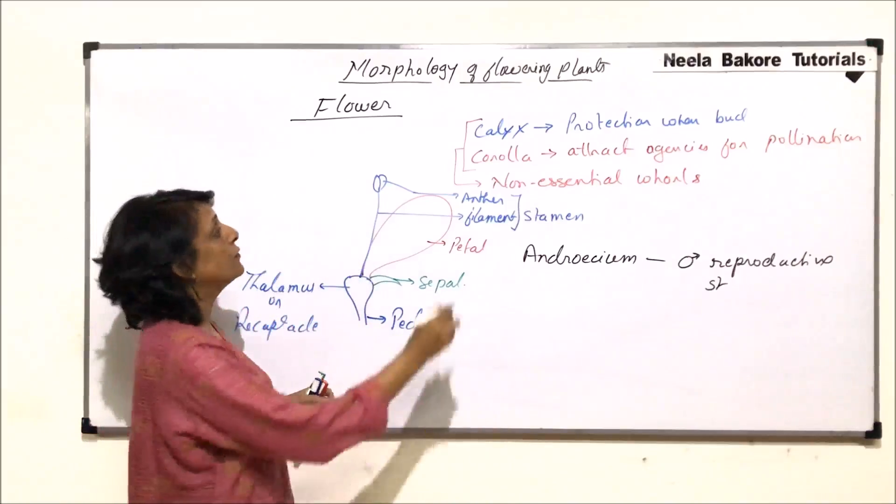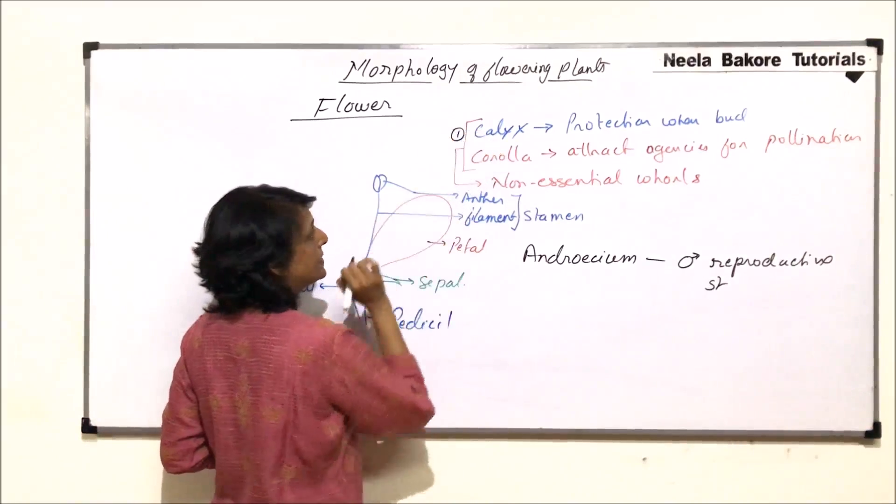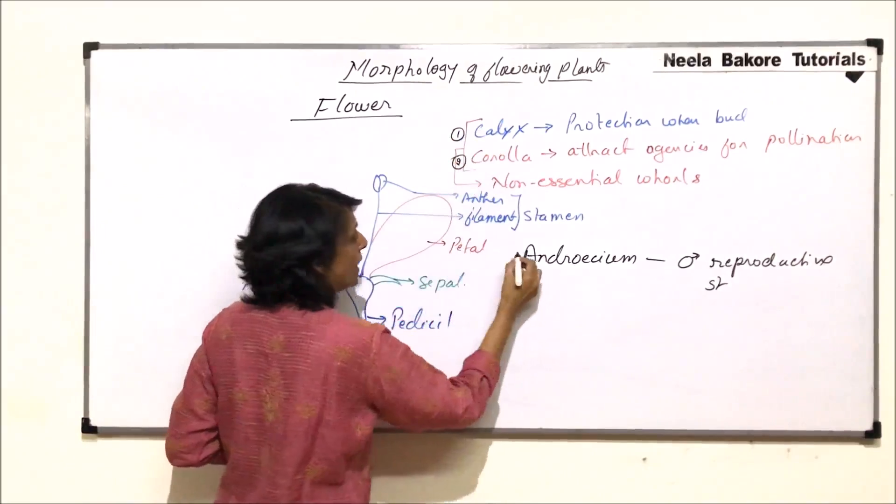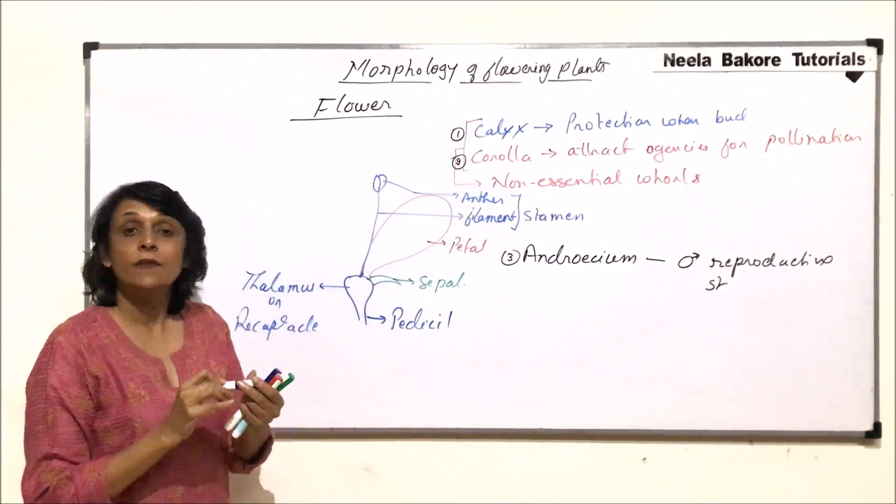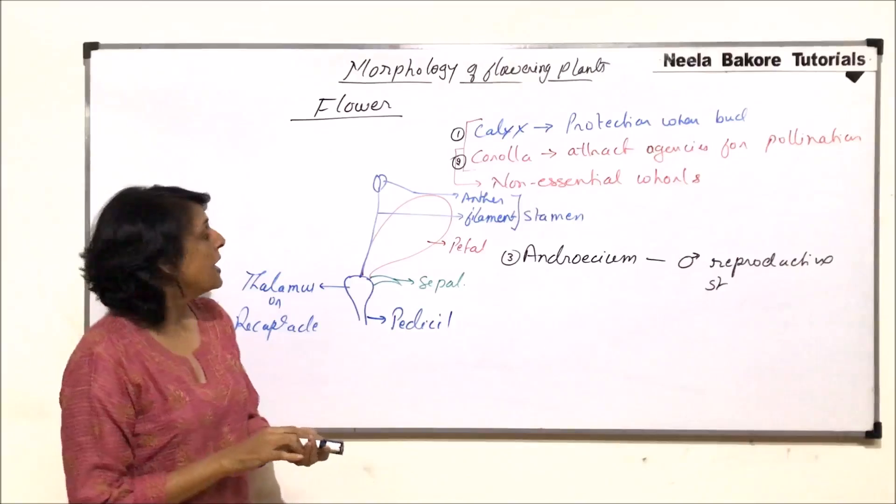We have talked of the outermost that is calyx, the second one corolla, this is the third one which is the male reproductive part.